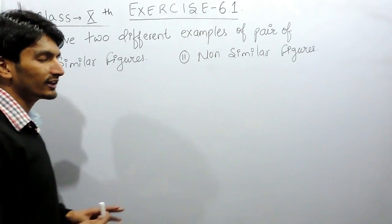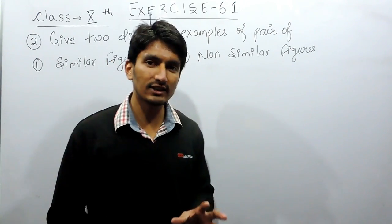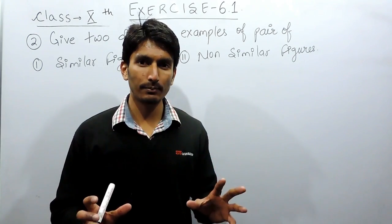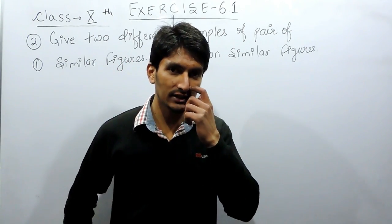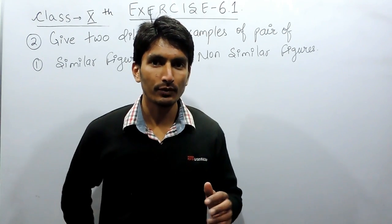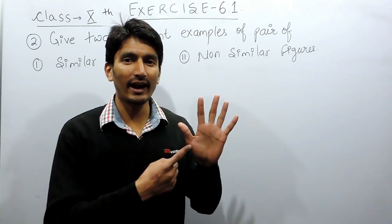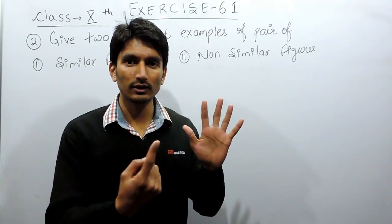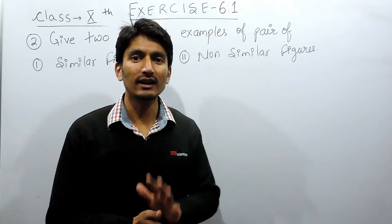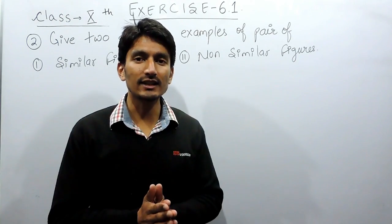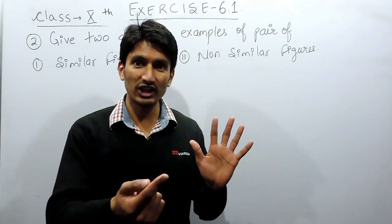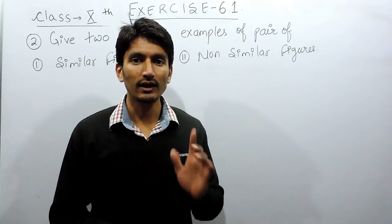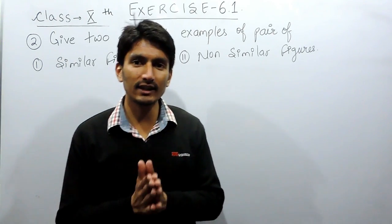We know that similar figures are basically those figures which are same in shape but different in size. For example, if I consider my hand and your hand, those two look alike but they are different in size — they are the same in shape but different in size, so those two are similar.